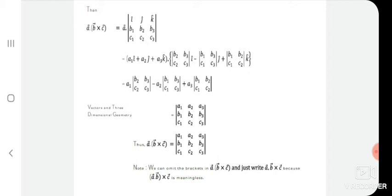You can solve this determinant on your worksheet. The direct result is: if you take the scalar triple product a·(b×c), it gives the determinant of [a1, a2, a3; b1, b2, b3; c1, c2, c3].